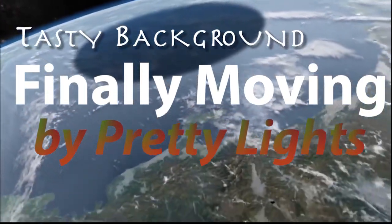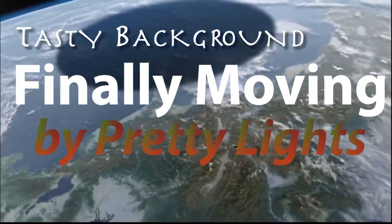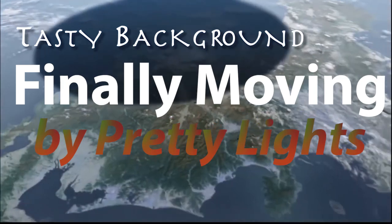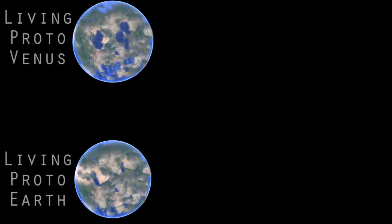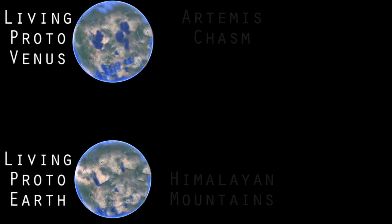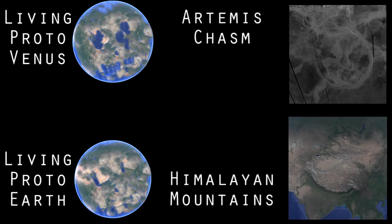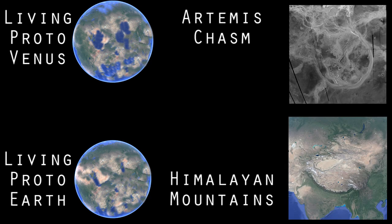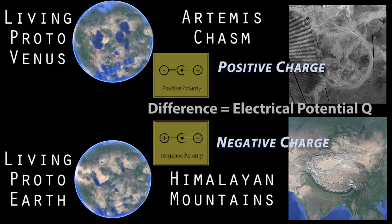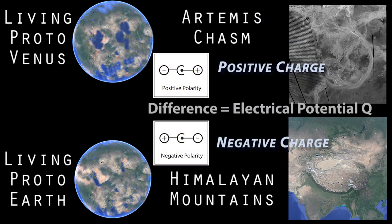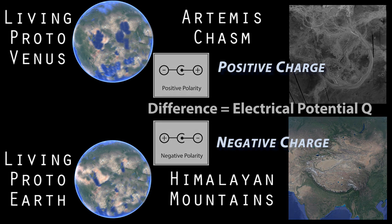In this video, we're going to look at the two craters created on the surfaces of Venus and the Earth during the apocalypse impact. Because the event was electrical in nature, the features of the craters are surprisingly similar to the actual diagrams of a positive and negative polarity, as you will see.